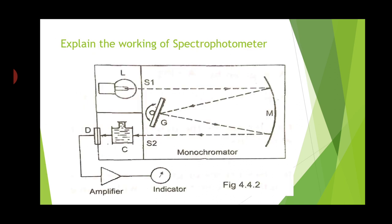Now we will see the working of a spectrophotometer. The setup includes two slits S1 and S2, grating G, mirror M, lamp L, cuvette C, photoelectric cell D, amplifier, and indicators.